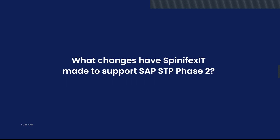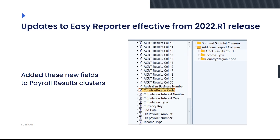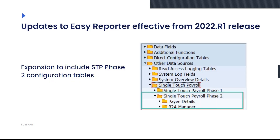Let's focus on what changes Spinifex IT have made to support these changes. We've obviously updated our Easy Reporter, our flagship solution around real-time operational transactional reporting, to cover off those areas. We've added in those new InfoType 188 classifications and also added those into our payroll results area for any reporting from the ACRT. We've also expanded our data sources to cover off the STP Phase 2 configuration tables, as shown in the PowerPoint now.